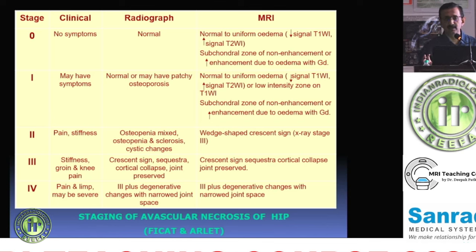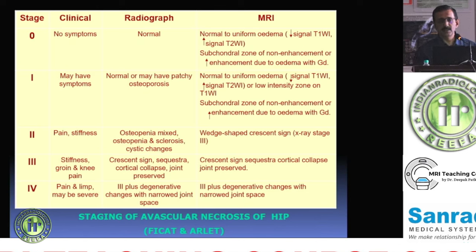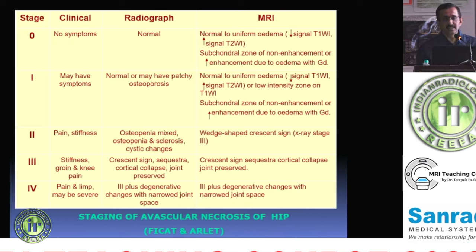The subchondral plate tries to save the femoral head as long as possible. However, if the patient continues weight bearing, playing sports, or trekking, the subchondral plate eventually collapses — that is Stage 3 — and the patient then requires THR. Before collapse (up to Stage 2), core decompression surgery or strict non-weight-bearing can save the femoral head. As a radiologist, your aim is to diagnose AVN at Stage 2 or earlier. Beyond Stage 3, MRI does not change management, as both advanced AVN and osteoarthrosis will ultimately require THR.